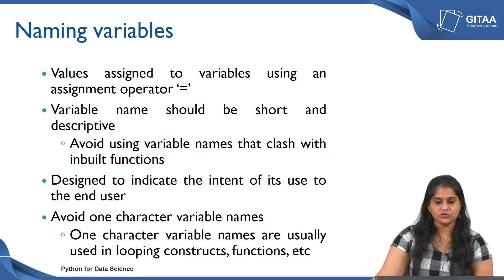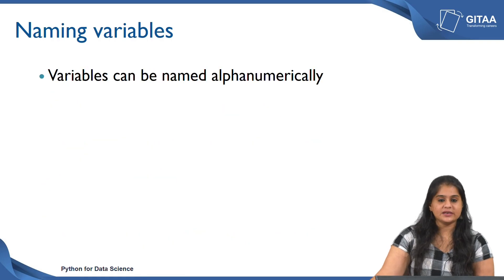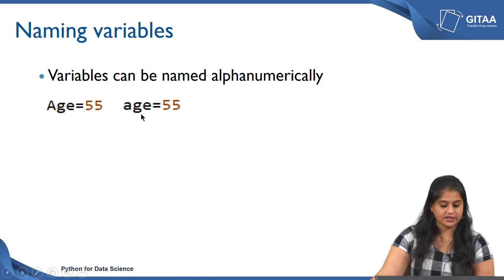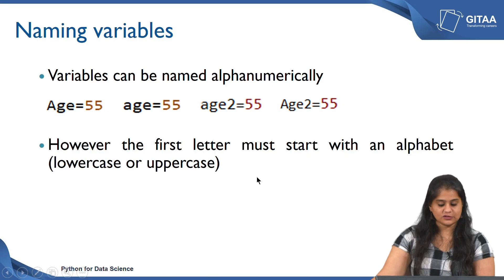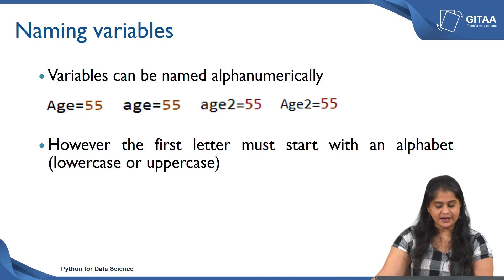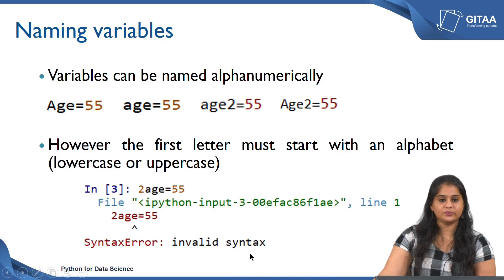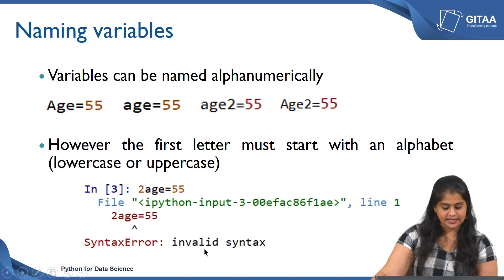One-character variable names are usually used in iterations, functions, and looping constructs. Variables can be named alphanumerically. For example, if I have a variable called age whose value is 55, I can either have the entire name in lower case or begin with an upper case. You can also add a number to it — if I am creating another variable called age2 I can add the number after the alphabets. The first letter should always begin with an alphabet; if you begin with a number the compiler throws an error saying invalid syntax.